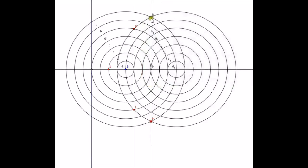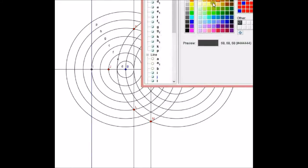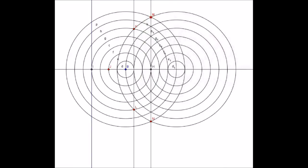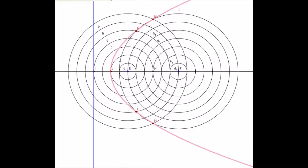We have more than enough information to compute the curve algebraically, but why not just use the GeoGebra drawing package? It has a nice function: to draw a parabola, select a point and a directrix. Here's our focus point, here's our directrix line, and here's our parabola — drawn with respect to focus point B.